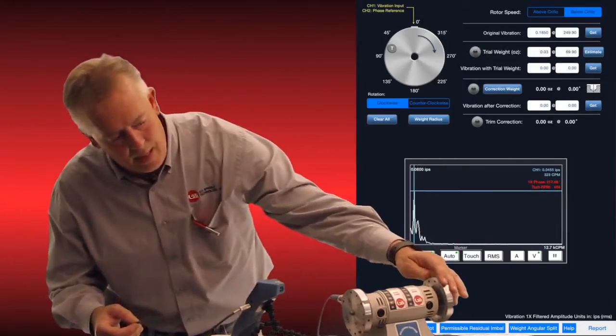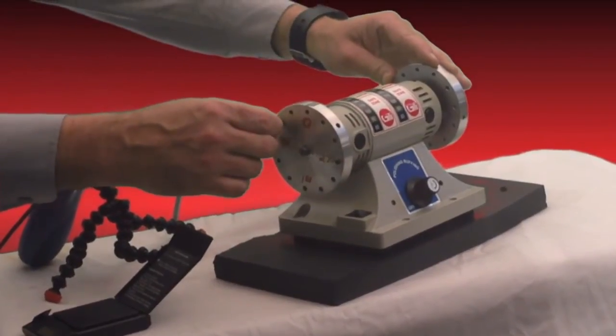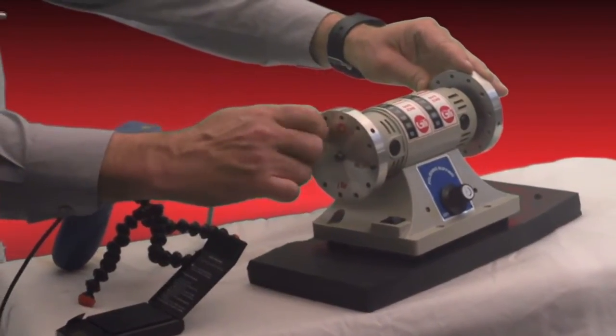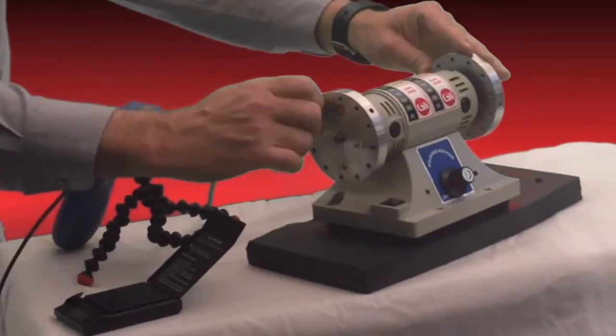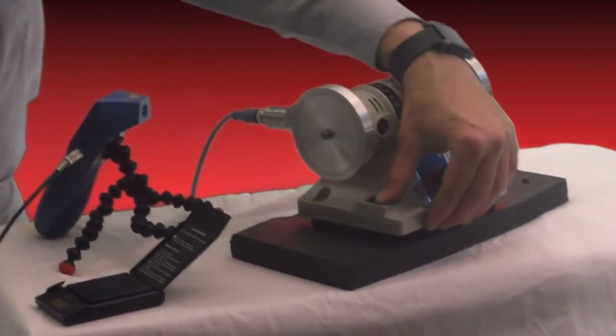And we will put that, I've marked this 90, 270, 180. We're going to put it right where it says at about 70 degrees. And that's where we're going to put our trial weight. And then we turn the motor back on.